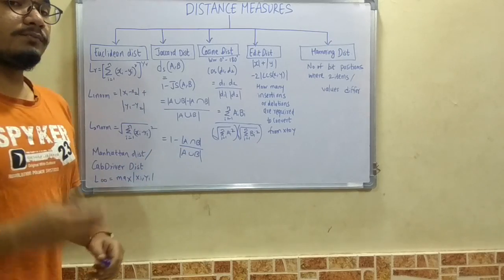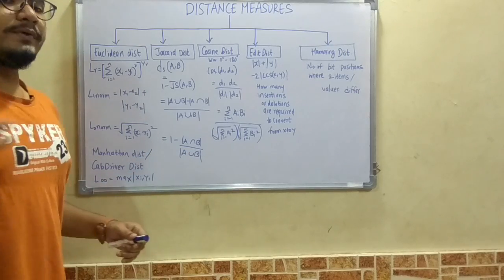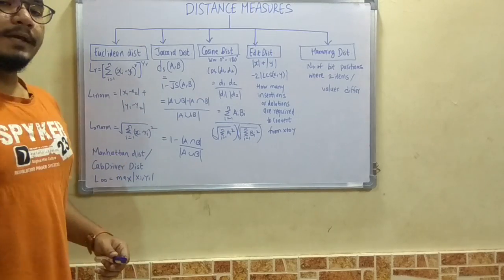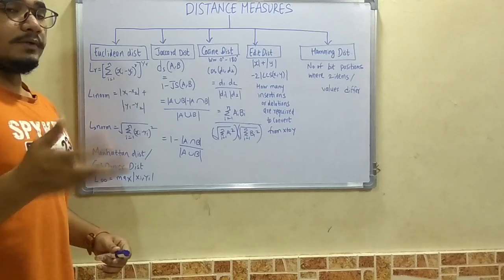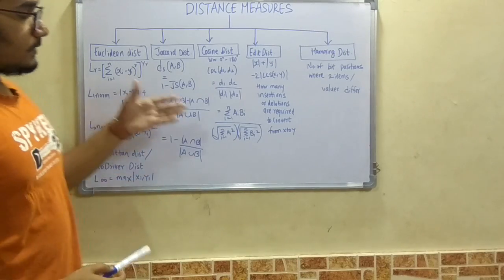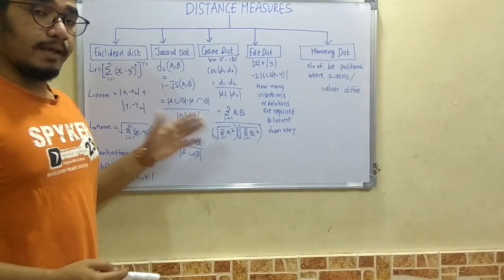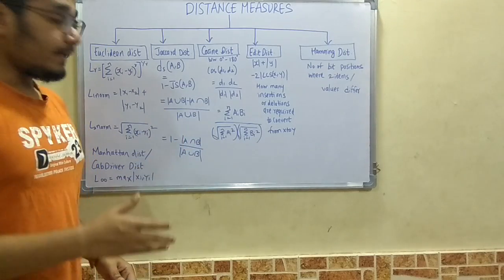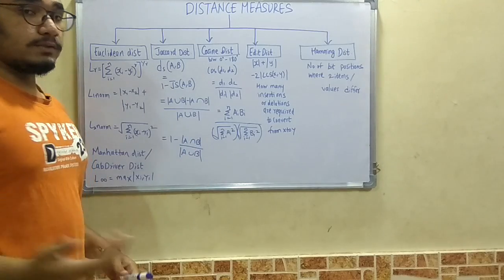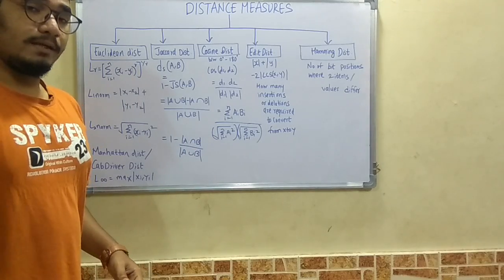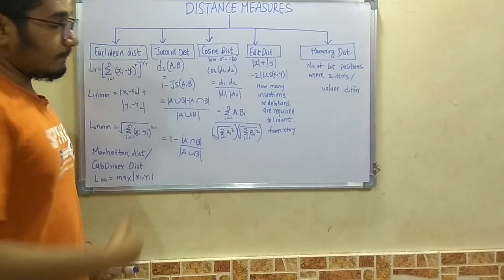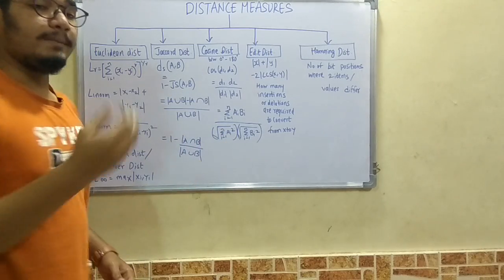The formula is given by: cos(d1, d2) equals (d1 dot d2) divided by (mod of d1 times mod of d2). We have an alternative formula: summation i from 1 to n of (ai times bi) divided by the square root of summation i from 1 to n of (ai square) multiplied by summation i from 1 to n of (bi square).